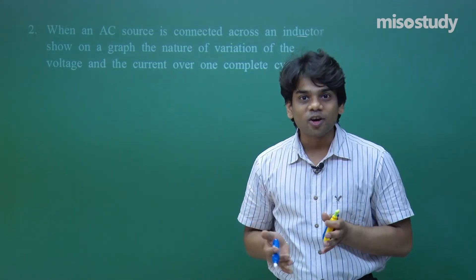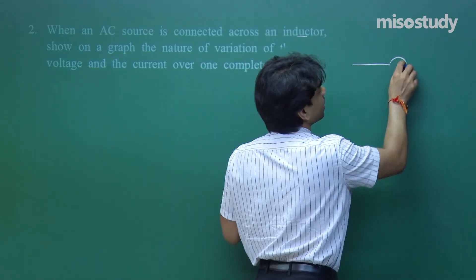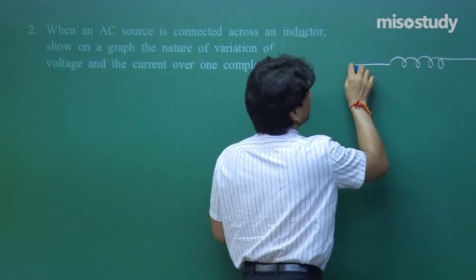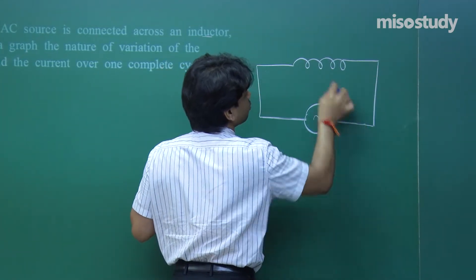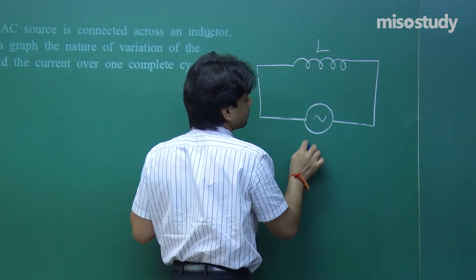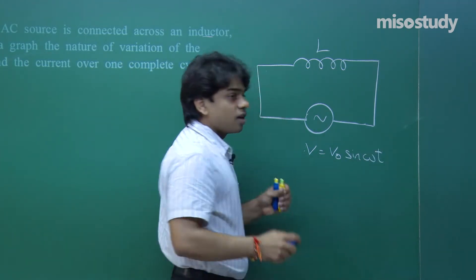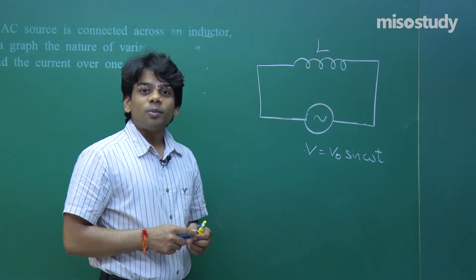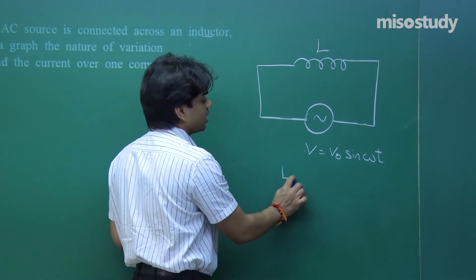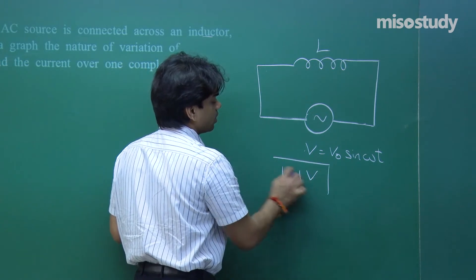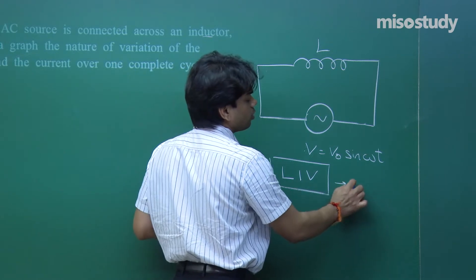It's a simple one-mark question, and I have told you how the inductor behaves when connected across an AC source. The connection is: inductor and AC source, where V = V₀ sinωt. Now in the case of an inductor, voltage leads the current — remember 'LIV': the inductor voltage leads the current by a phase of π/2.